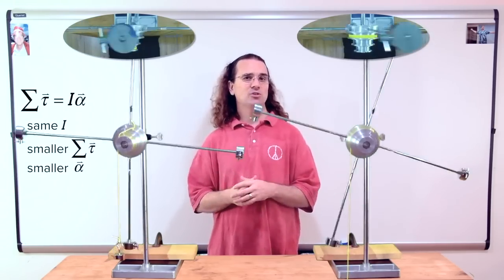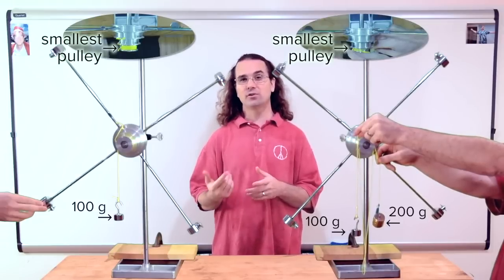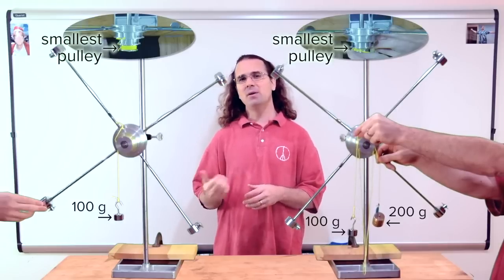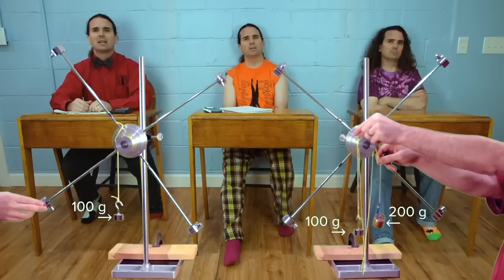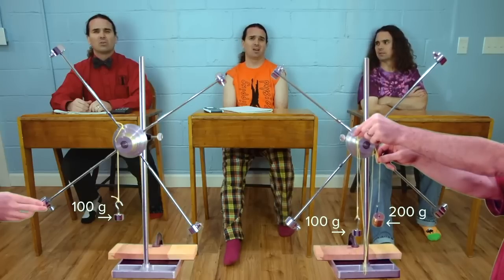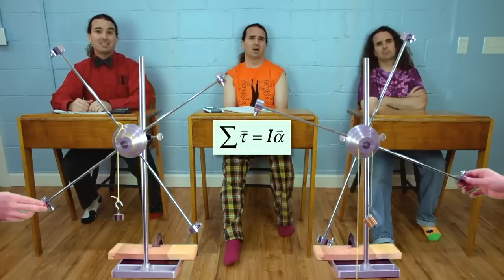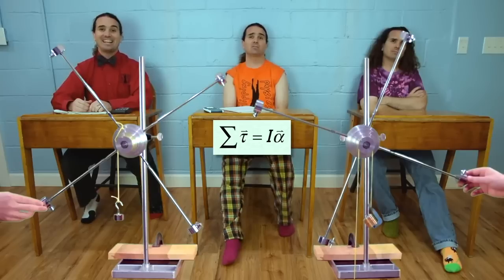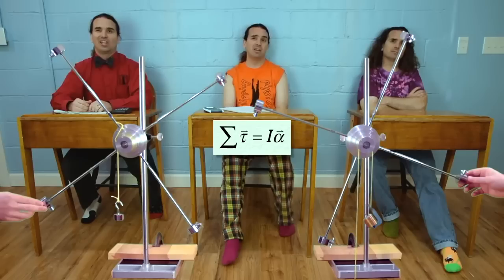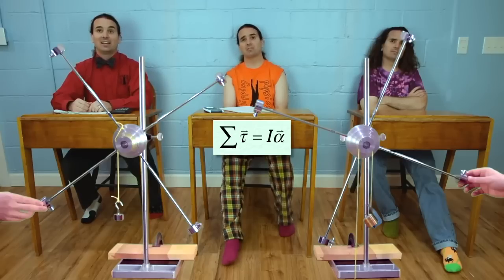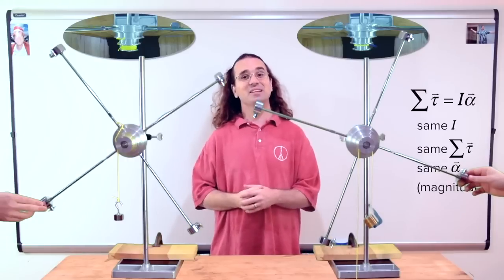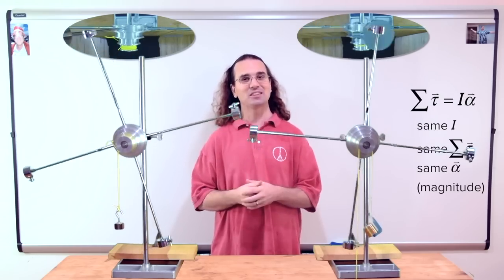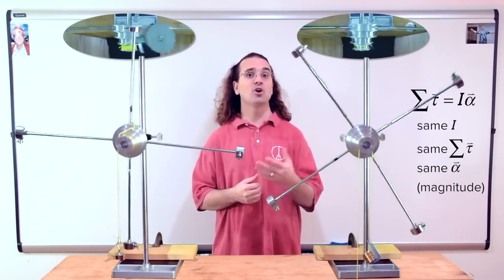Now what if I add 200 grams of mass to the same pulley, only wrapped around the other direction, such that it hangs over the other side of the pulley? What happens to the angular acceleration of the system now? Now there are two masses hanging from it. Remember, the rotational form of Newton's second law includes the net torque, not just a single torque — you need to add those two torques together. One of the masses is 100 grams and the other is 200 grams, but the two torques act in opposite directions. Therefore, the net torque actually ends up having the same magnitude as it did before, only now in the opposite direction. Therefore, the angular acceleration should have the same magnitude, only opposite in direction. Very nice. Let's see if you are correct. They do have roughly the same magnitude angular acceleration, only in opposite directions.